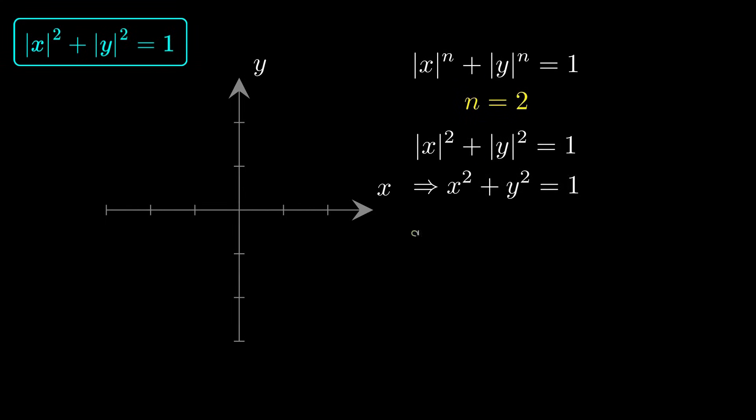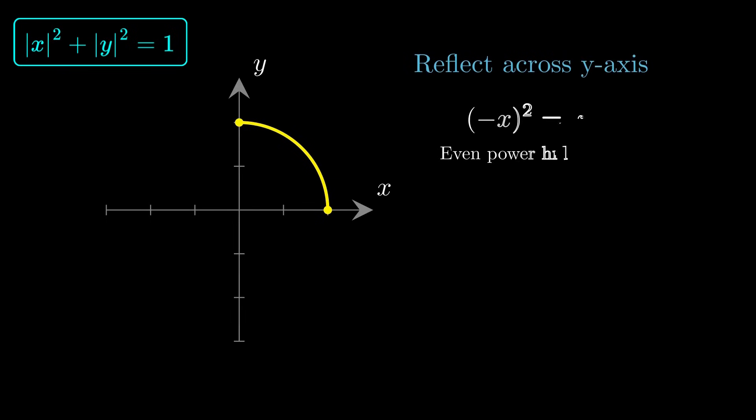When the exponent is 2, the equation becomes absolute x to the power 2 plus absolute y to the power 2 equals 1. Because squaring removes any sign, this simplifies to x squared plus y squared equals 1. That is the standard unit circle. Here is the first quadrant arc. Now reflect it across the y-axis. Negative x squared is exactly the same as positive x squared, so the curve mirrors perfectly to the left.